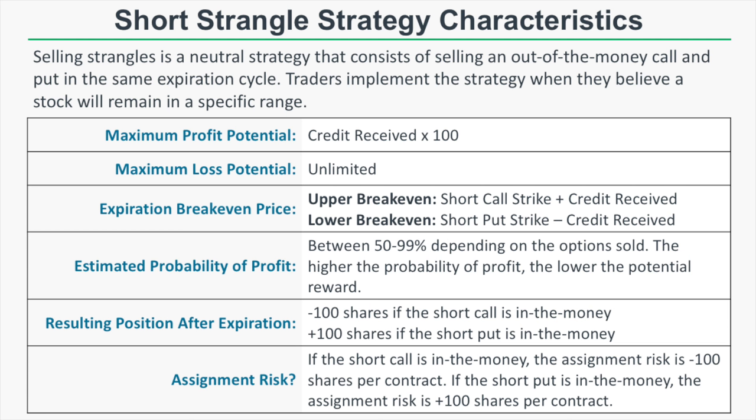If the stock price is between your short strikes when the options expire, those options will be worthless and you'll keep the entire credit you collected. The maximum profit potential when selling a strangle is the credit received times 100 — so a $5.00 credit yields a $500 maximum profit. Since the short strangle includes a short call not covered by long stock or a long call, there is unlimited loss potential on the upside, as a stock can theoretically increase indefinitely.